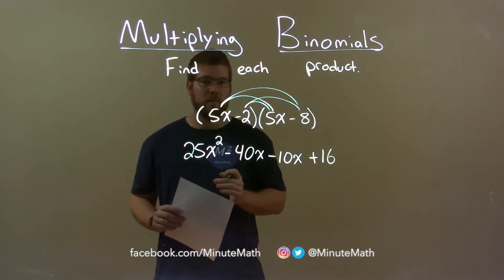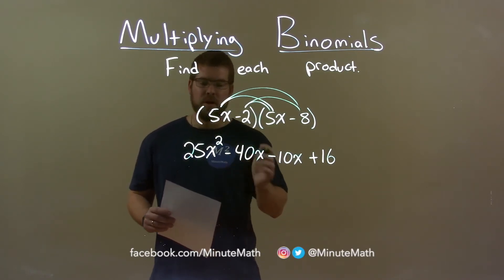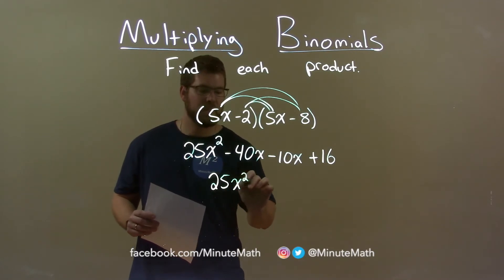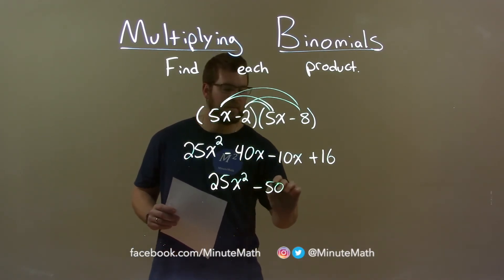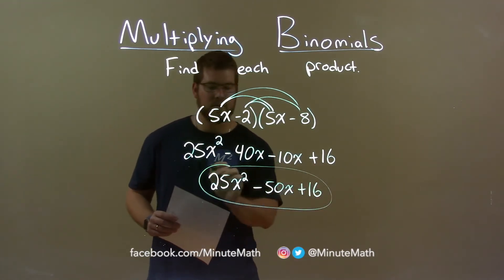We now want to combine our like terms. Minus 40x and minus 10x are our like terms, so we bring down everything else. 25x squared minus 40x minus 10x is minus 50x. Bring down the plus 16, and there we have our final answer.